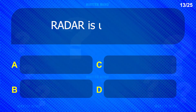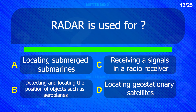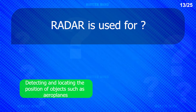Radar is used for detecting and locating the position of objects such as airplanes.